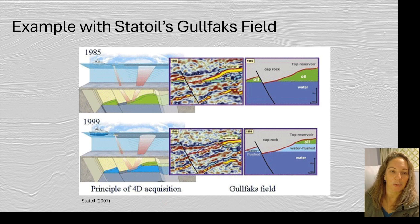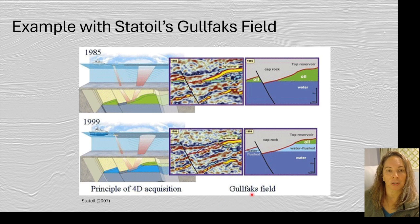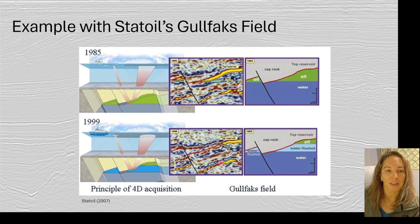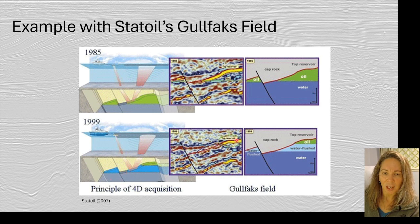This is a classic example — the Statoil Gullfaks field. They took two surveys, one in 1985 and one in 1999. In 1985, the reservoir was essentially full of oil, and you could see that in the seismic as a nice bright amplitude representing the oil-water fluid contact. Then, roughly 14 years later, they had produced a lot of oil in both reservoirs on either side of the fault, leaving only a small oil cap remaining, and you could see how the bright spot got much dimmer.